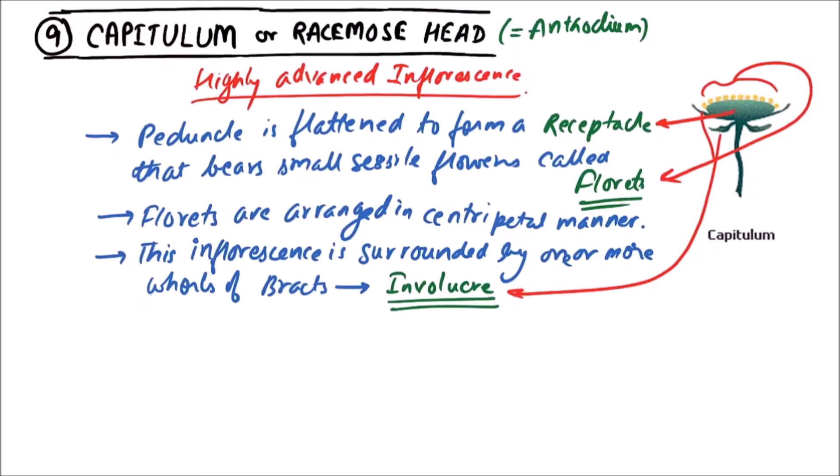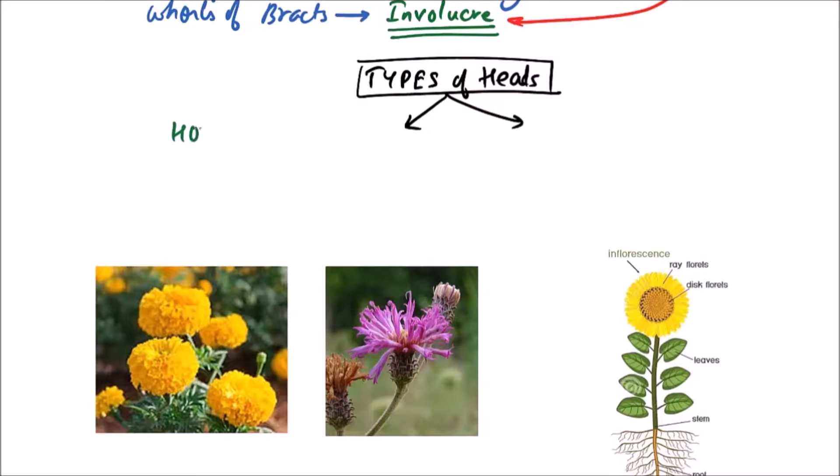Now the types of heads. Heads or capitulums are classified into two types: first one is homogamous heads and another one is heterogamous heads.